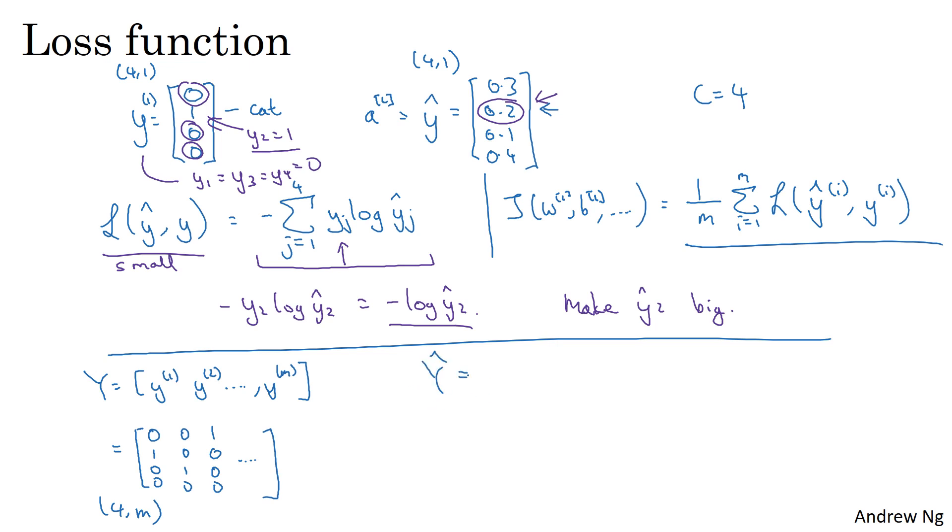And similarly, y hat will be y hat 1 stacked up horizontally, going through y hat m. So if this is actually y hat 1, or the output on the first training example, then y hat will be this 0.3, 0.2, 0.1, 0.4, and so on. And y hat itself will also be a 4 by m dimensional matrix.